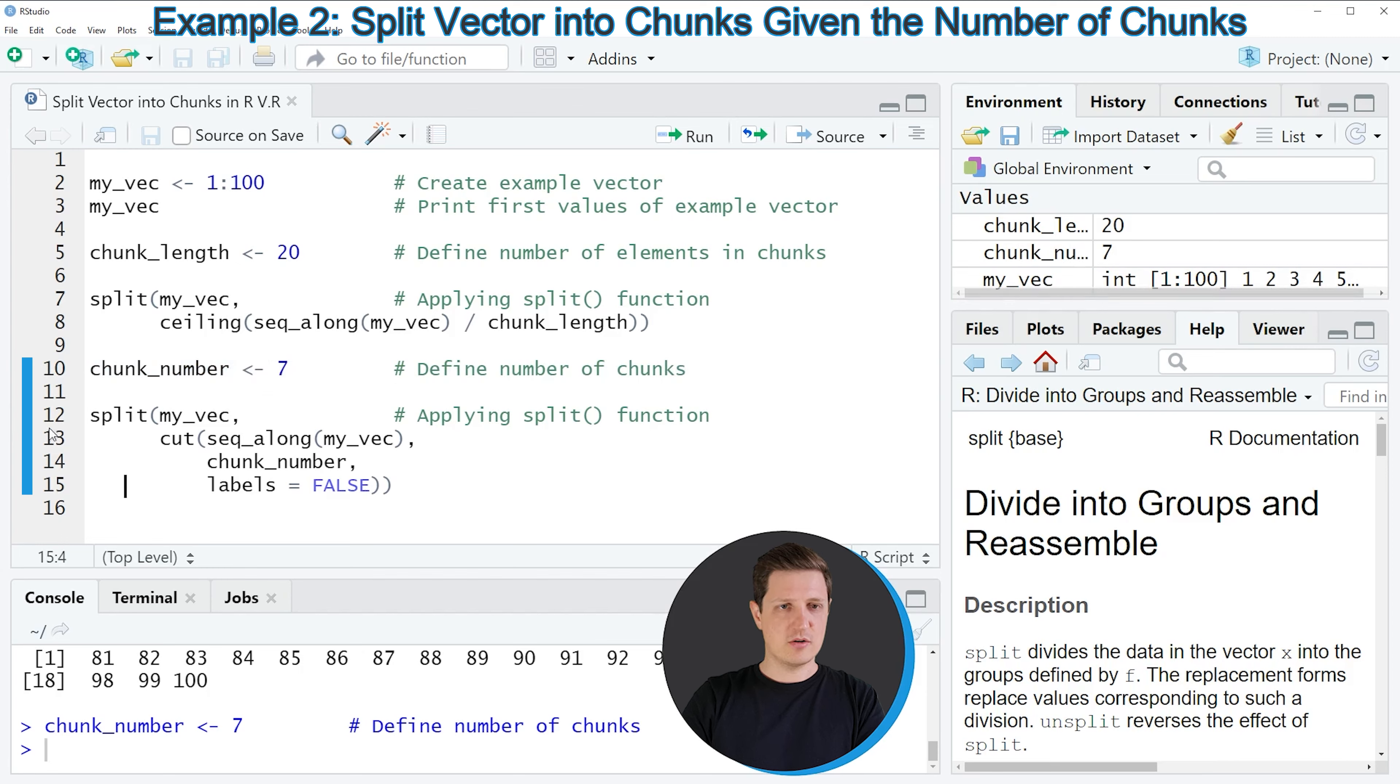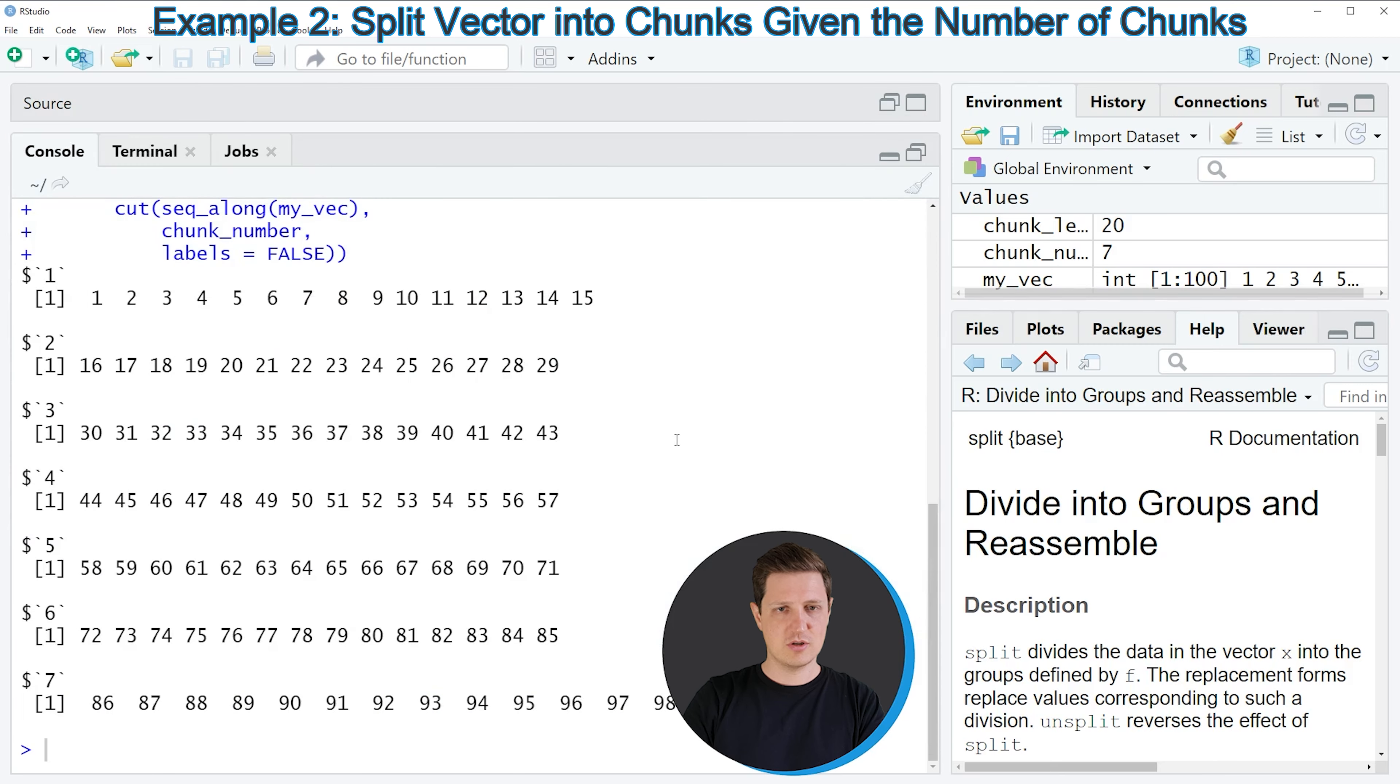And then we can run the code that you can see in lines 12 to 15. In these lines, we are using the split function again, and we are also using the seqalong function. However, this time, we are also using the cut function. If you run lines 12 to 15, you can see that another list output is created at the bottom in the RStudio console.